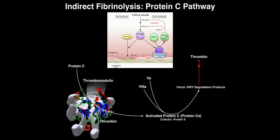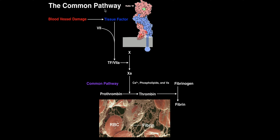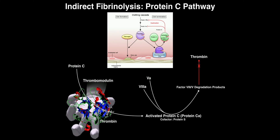Normally what thrombin does is it cleaves fibrinogen into fibrin — that's what we saw in the final common pathway video. After prothrombin gets converted to thrombin, thrombin acts on fibrinogen to convert it into fibrin, which produces the clot. But we don't want that here; we want thrombin to be inhibited. What thrombomodulin does is it grabs thrombin and actually changes its activity. When thrombomodulin has bound thrombin, thrombin now has the opposite function — instead of forming fibrin clots, it's actually going to inhibit them.